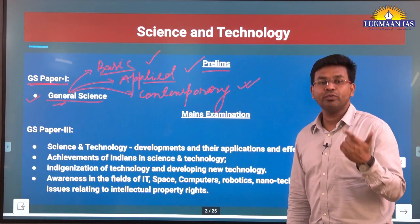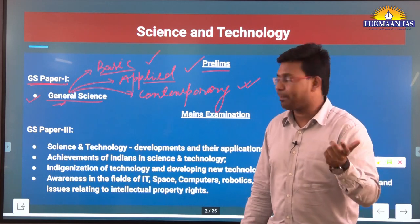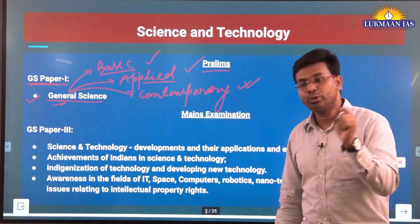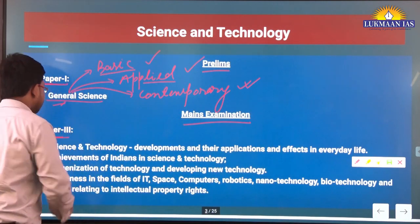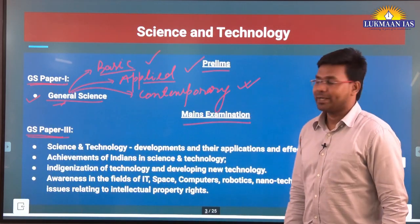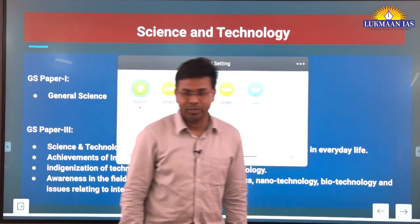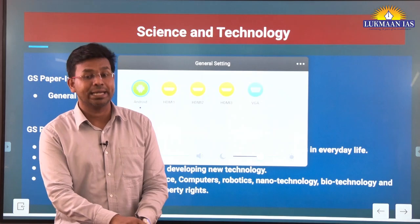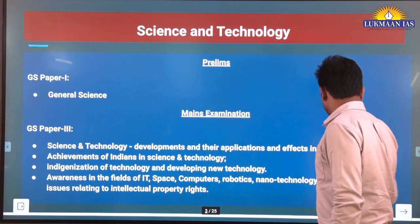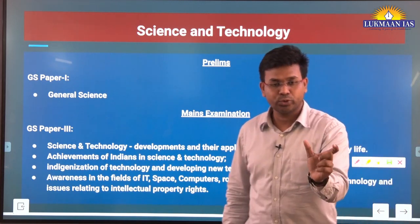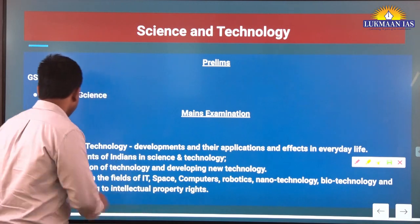To understand what to study in basic science, applied science, and current affairs, we should look at the mains exam syllabus for science and technology. In the mains examination, science and technology is in GS Paper 3. The first point is: science and technology developments and their application and effects in everyday life — this itself talks about the importance of reading current affairs and knowing applications.